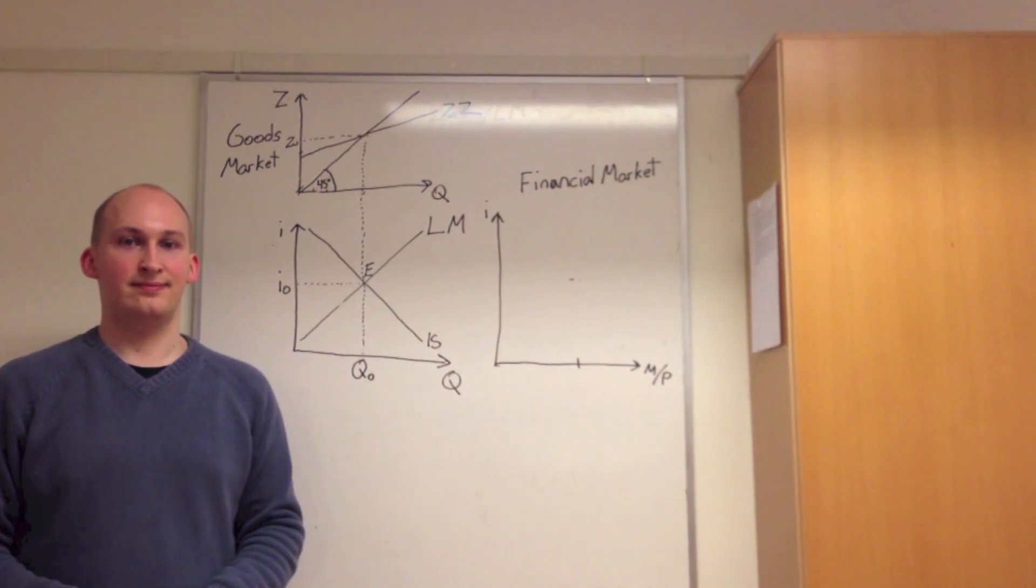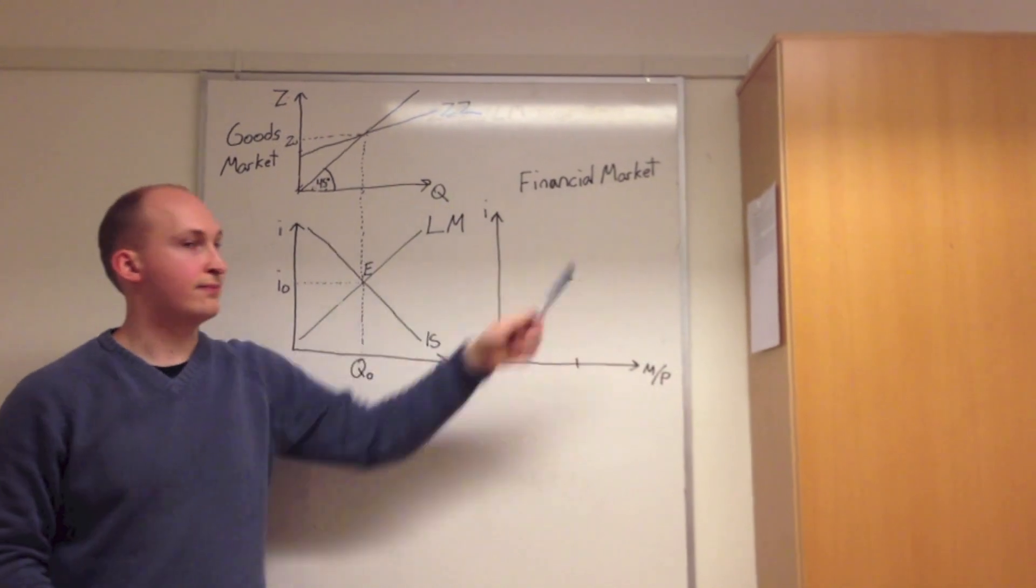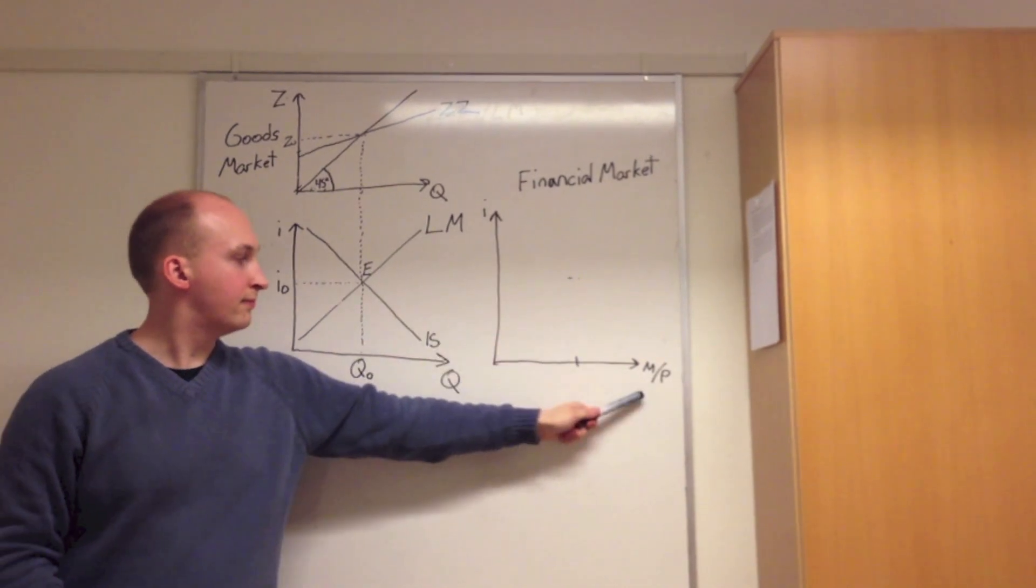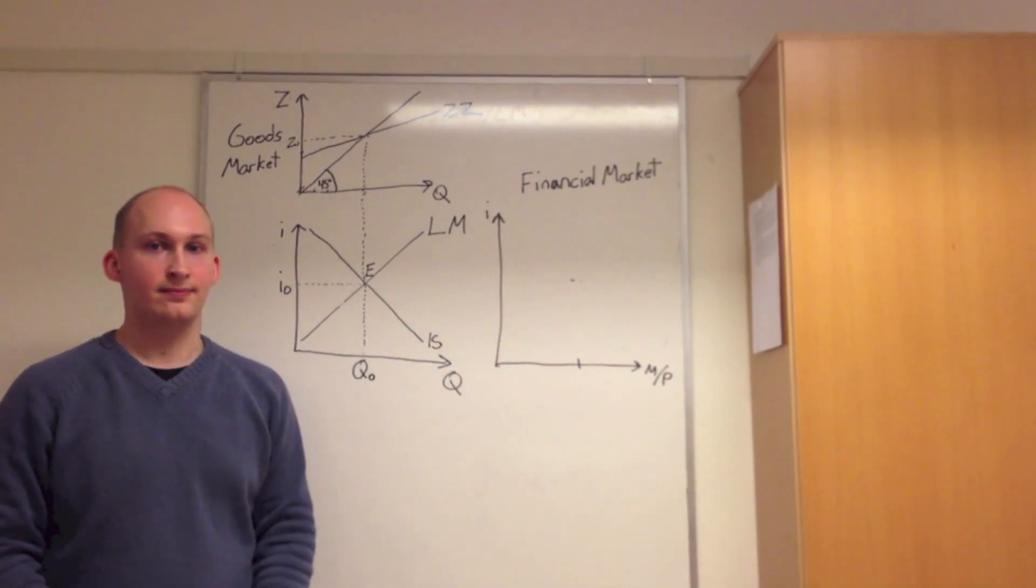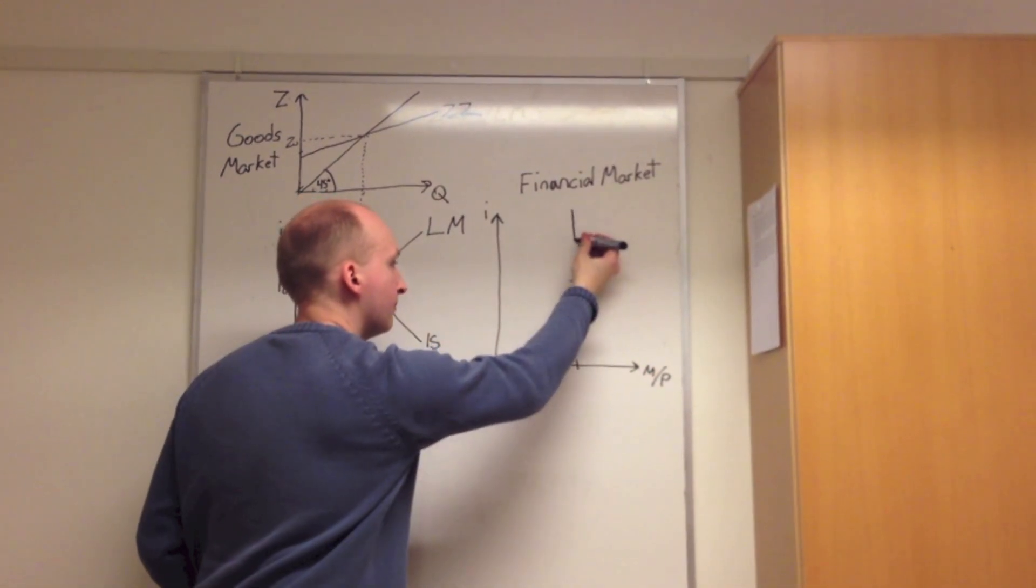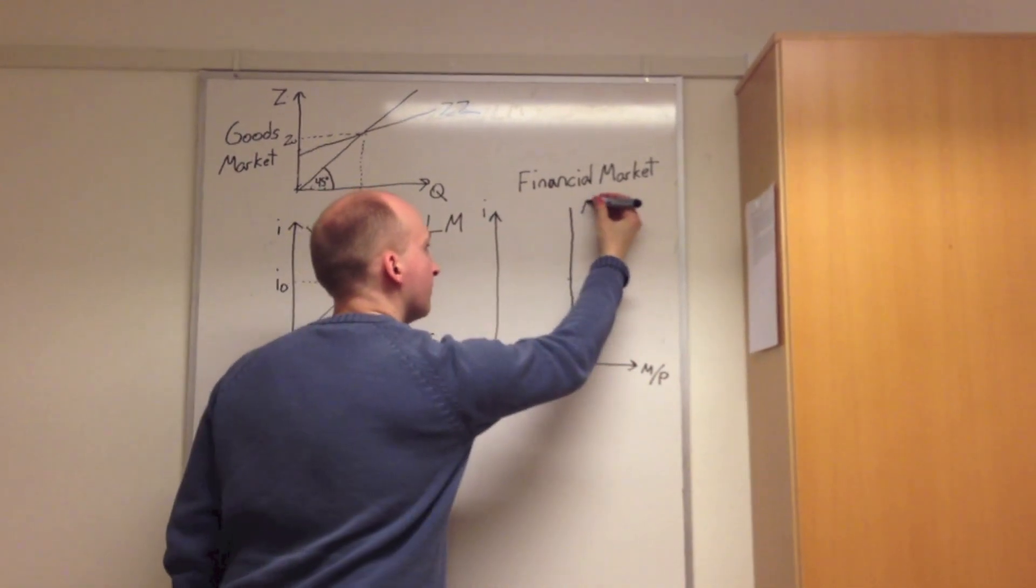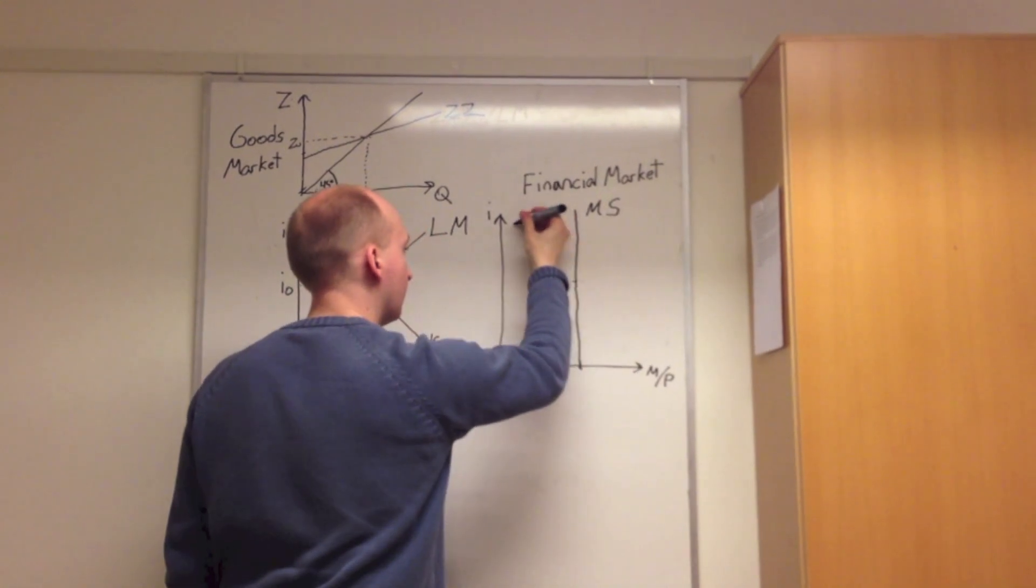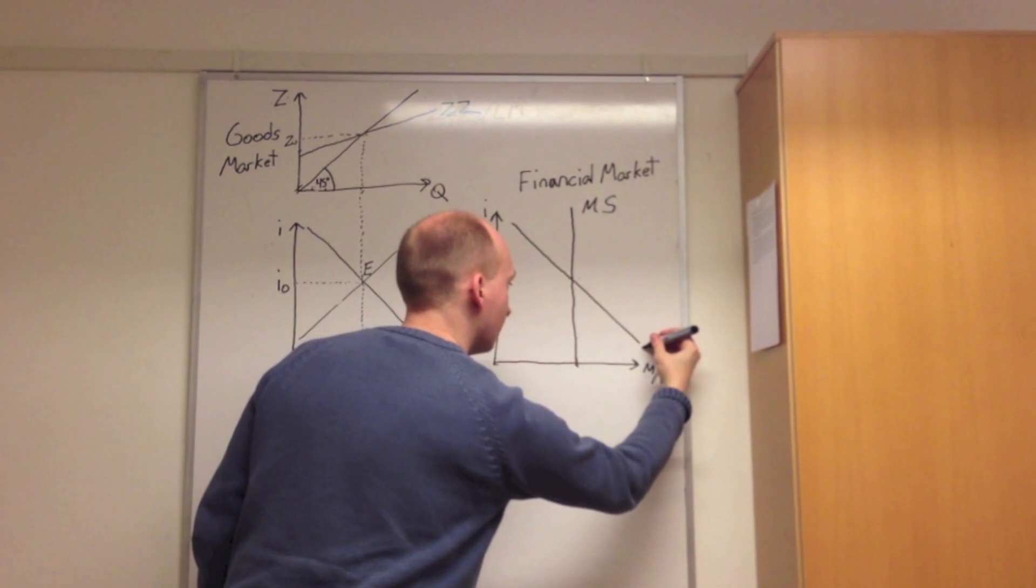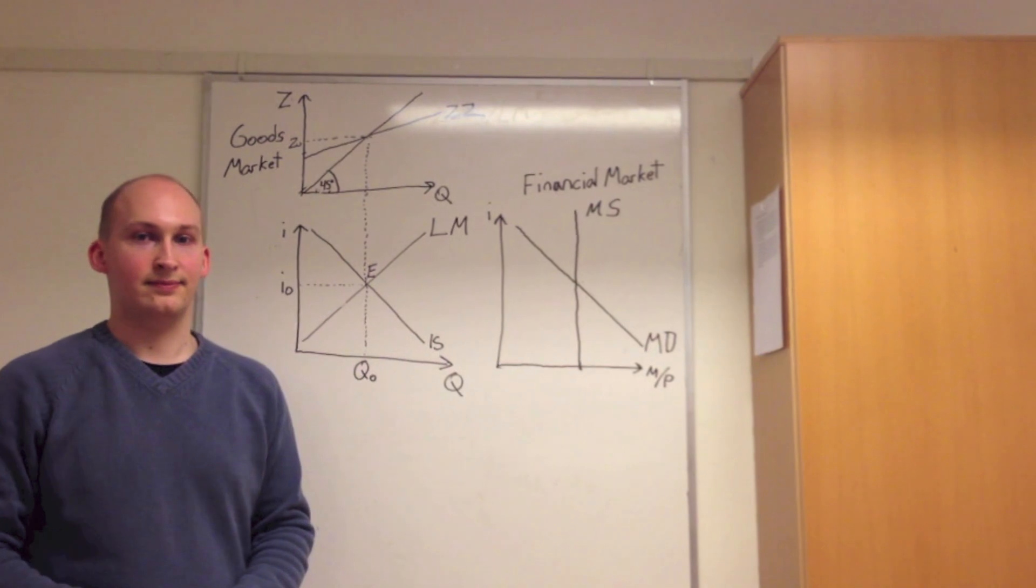Next, we derive the LM curve, which is given as the equilibrium of the financial market, where we have I on the y-axis giving the interest rate, and M over P being the total money stock on the x-axis. So first we begin by drawing a vertical line representing the money supply in the economy, which does not change. Then we have a downward sloping line being the total money demand, where the higher the interest rate, the lower the money stock.